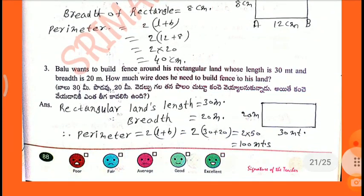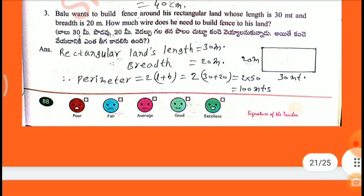Third: Bolu wants to build a fence around his rectangular land whose length is 30 meters and width is 20 meters. How much fencing does he need? Answer: perimeter equals 2 into (L plus B) — 2 into (30 plus 20) — 2 into 50 equals 100 meters.